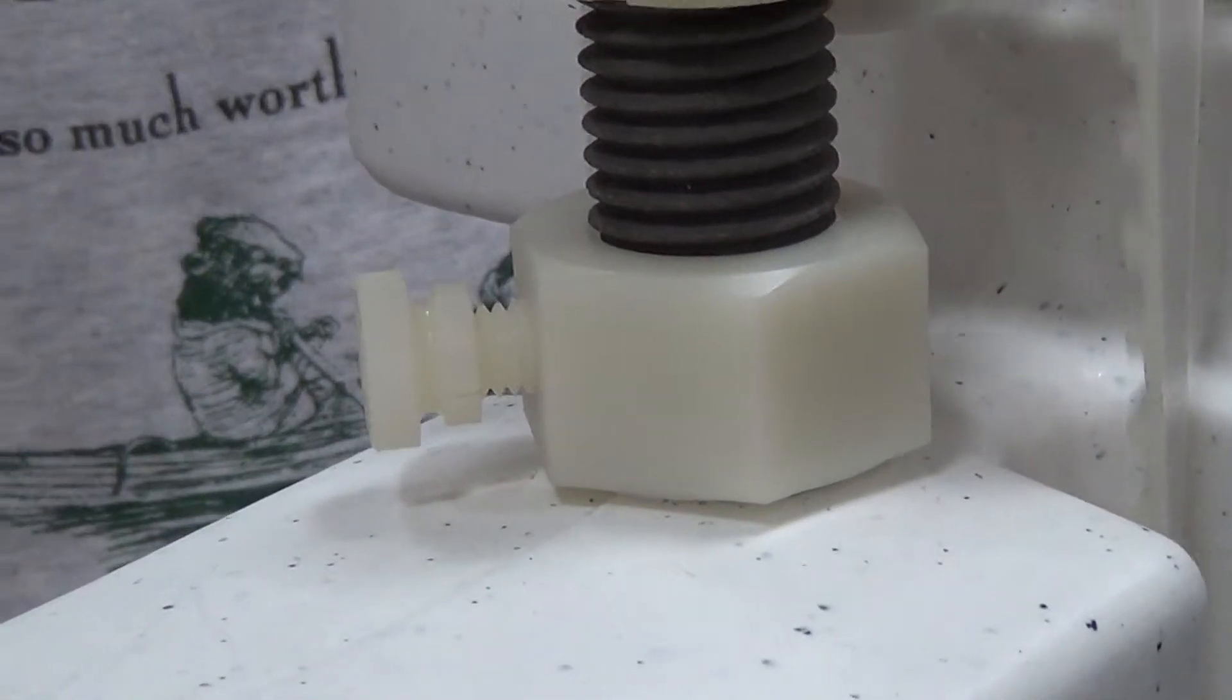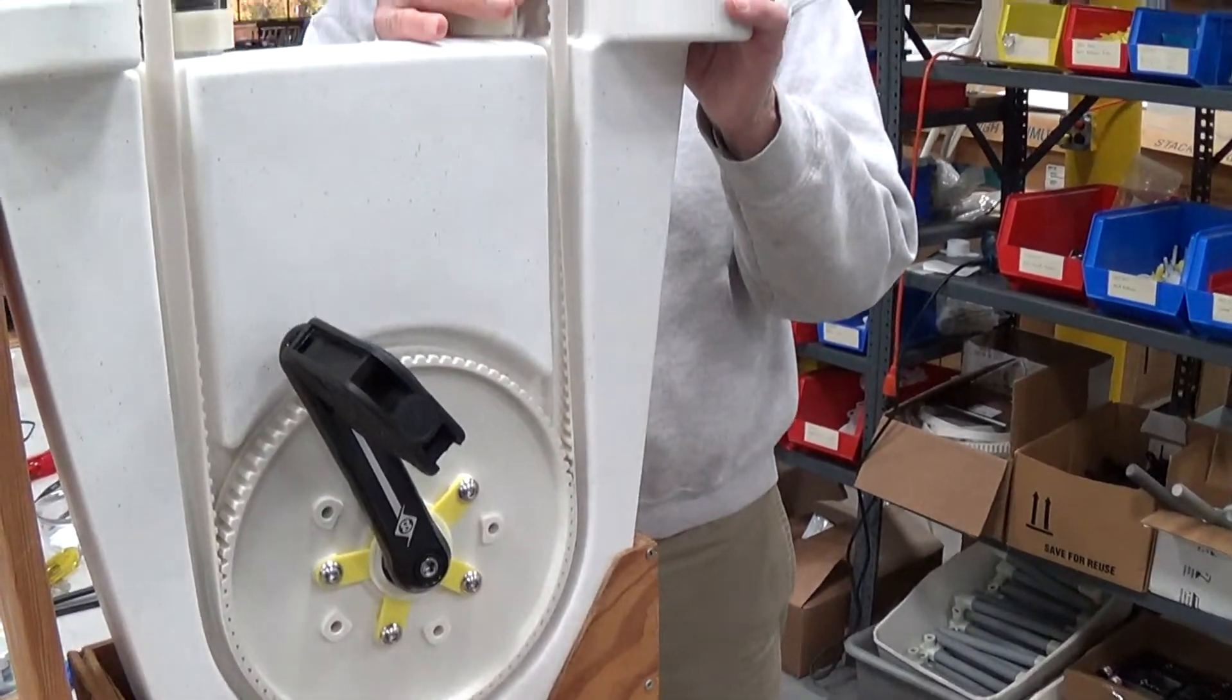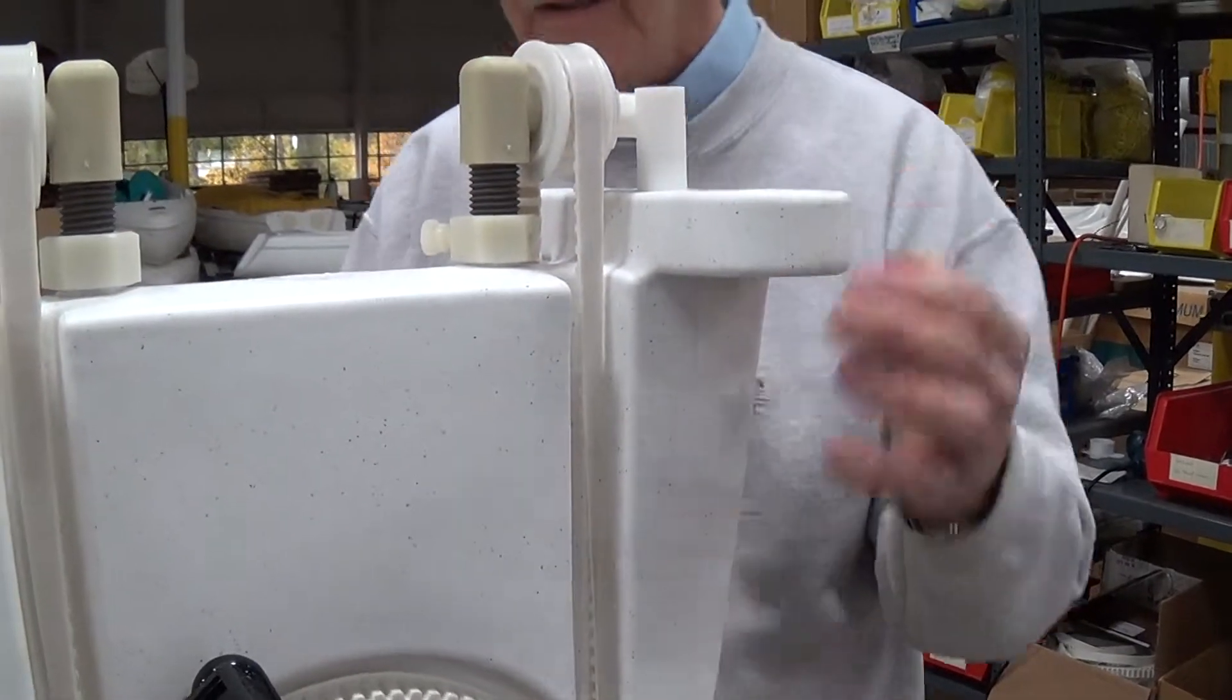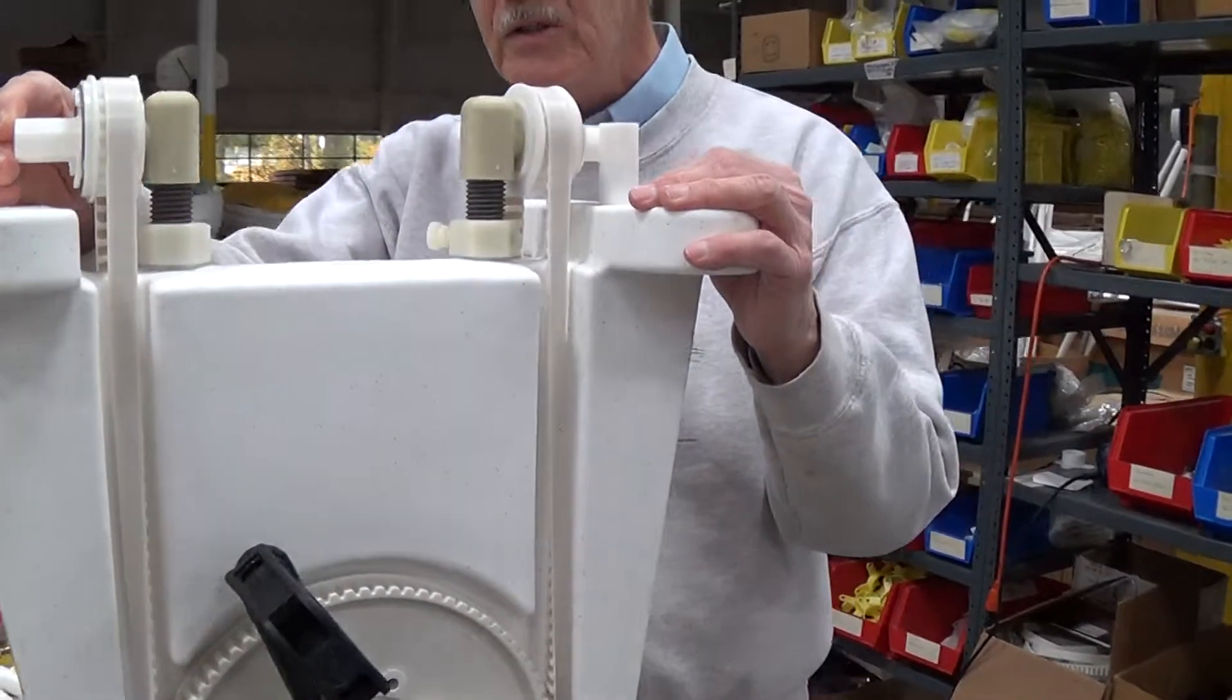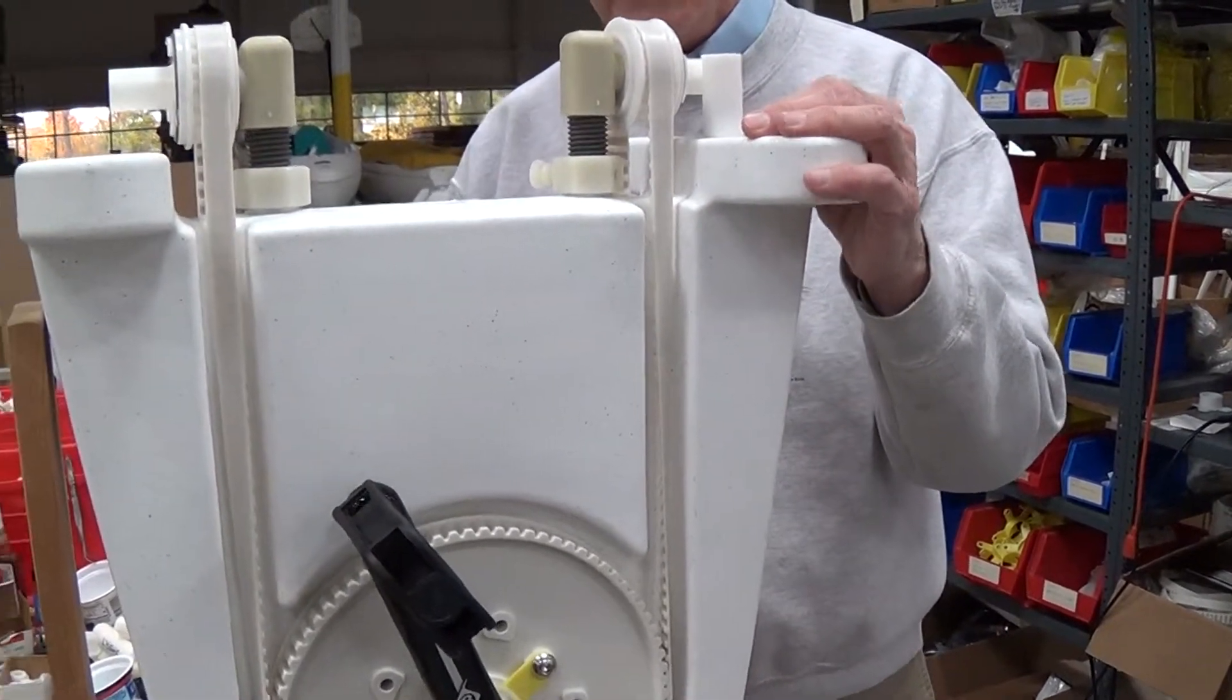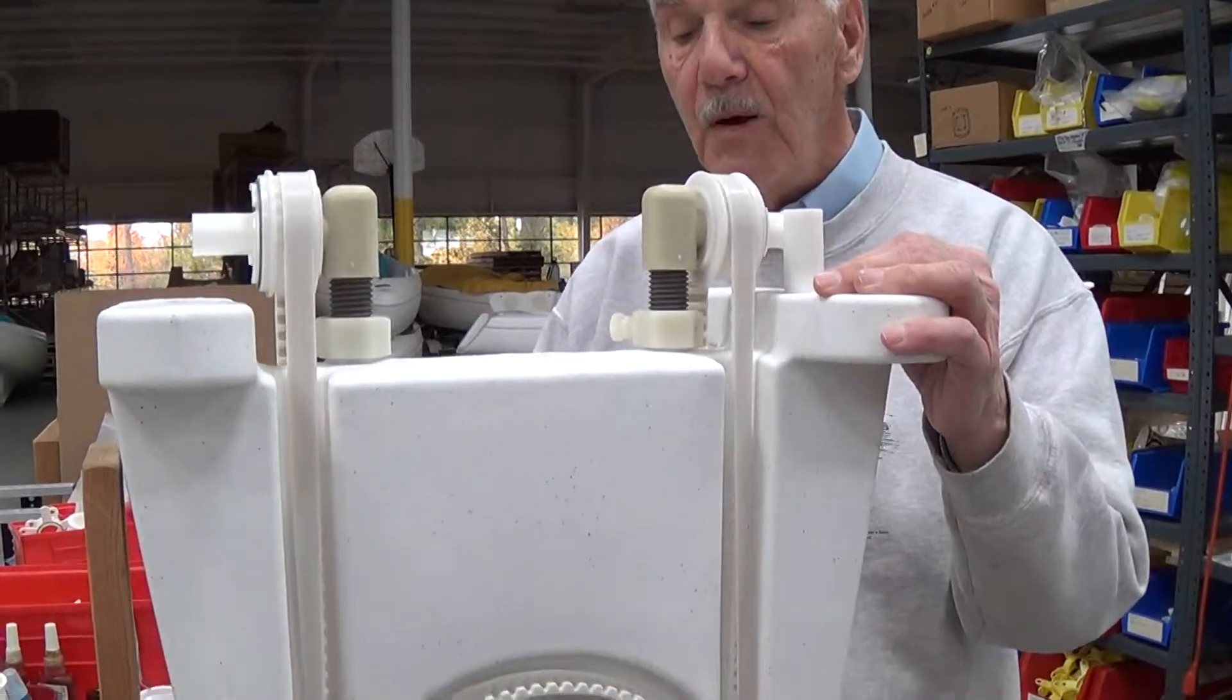Then it's perfectly tensioned. If you over-tension the drive belt, it's going to put a lot of load on the bearings that are inside of this and the bearings down in here. It just causes more friction and does not solve other problems that may be causing other situations in the boat.